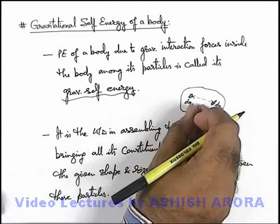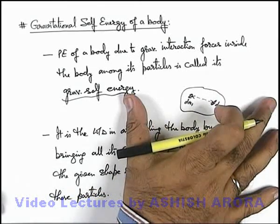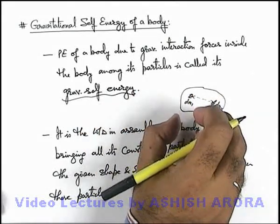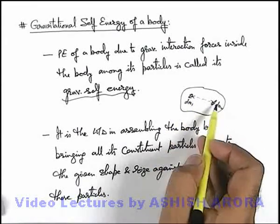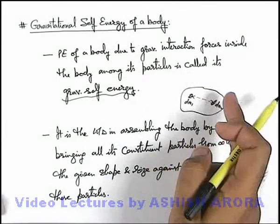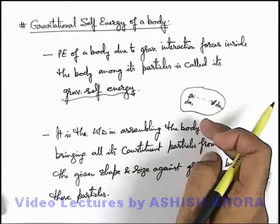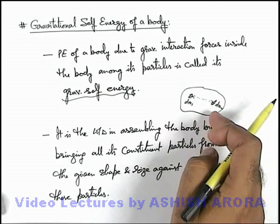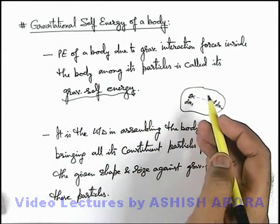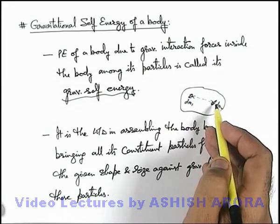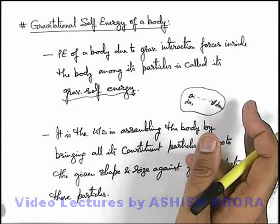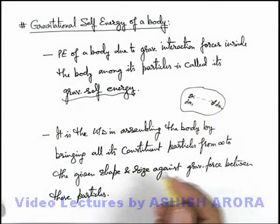So we can say when all particles of the body are at infinite separation and all elemental particles are brought close to each other, then against their gravitational interaction, when we assemble these particles in a given shape and size of a body, whatever amount of work is done is stored in the form of gravitational interaction energy of the body particles — that is termed as gravitational self energy. And as we have discussed, gravitational forces are always attractive, so the external work required in assembling these particles against gravitational forces will always be negative. So gravitational self energy is also a negative parameter.